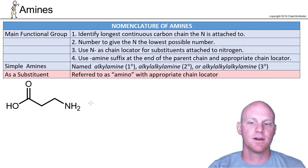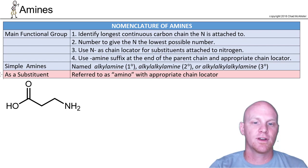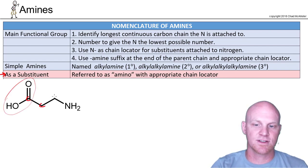All right, finally, what do we do when the amine is not the highest-ranking functional group you have? So then you're going to name it as a substituent. So here, the highest-ranking functional group we have is this carboxylic acid right here. And so we're going to name this as a carboxylic acid, and we'll give the carboxylic acid priority in the numbering system as well.